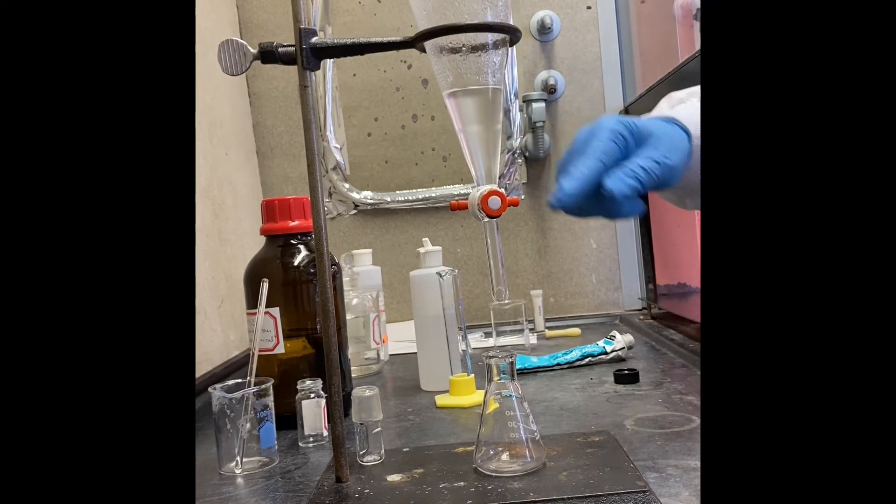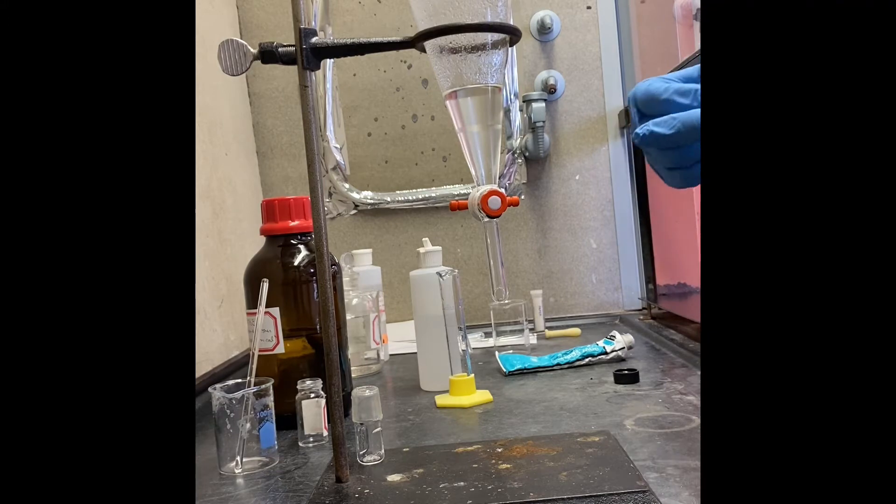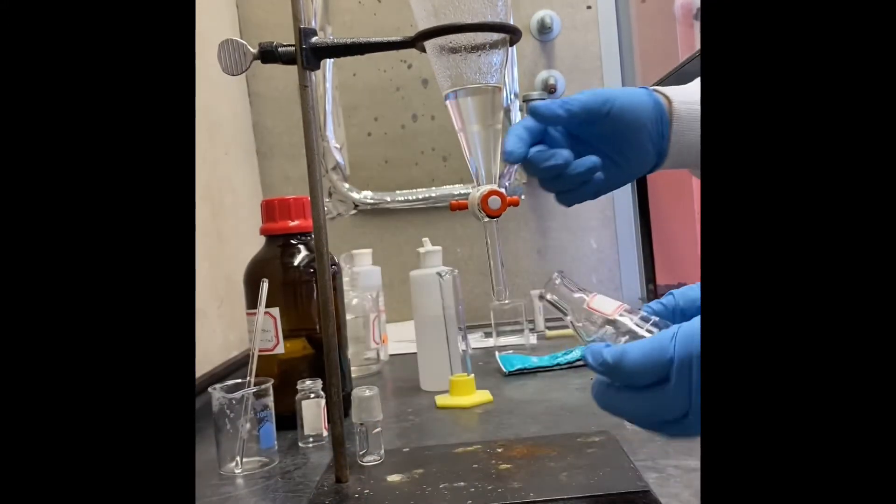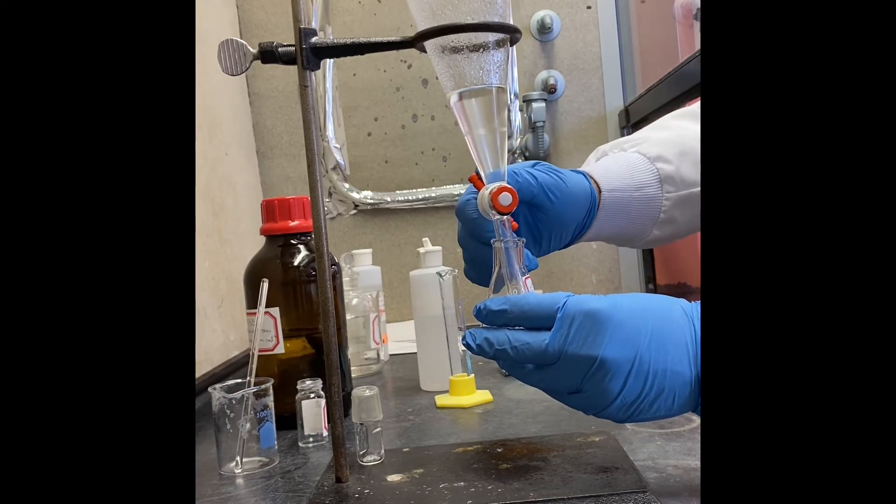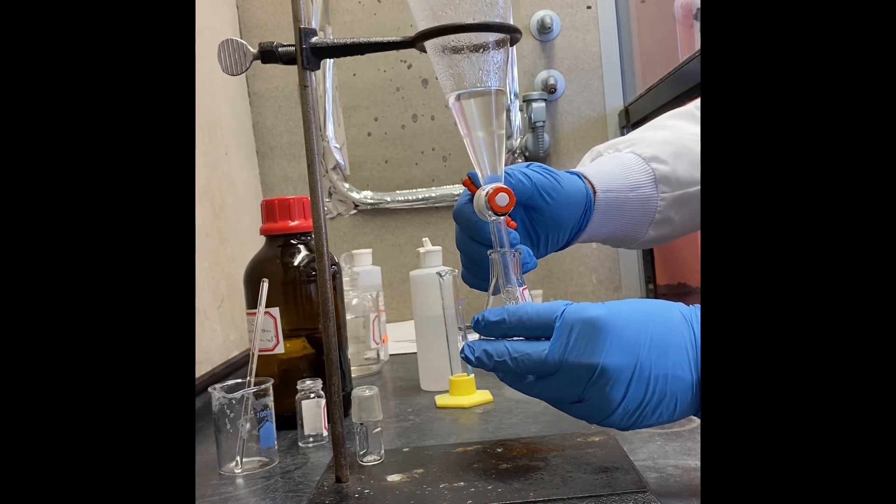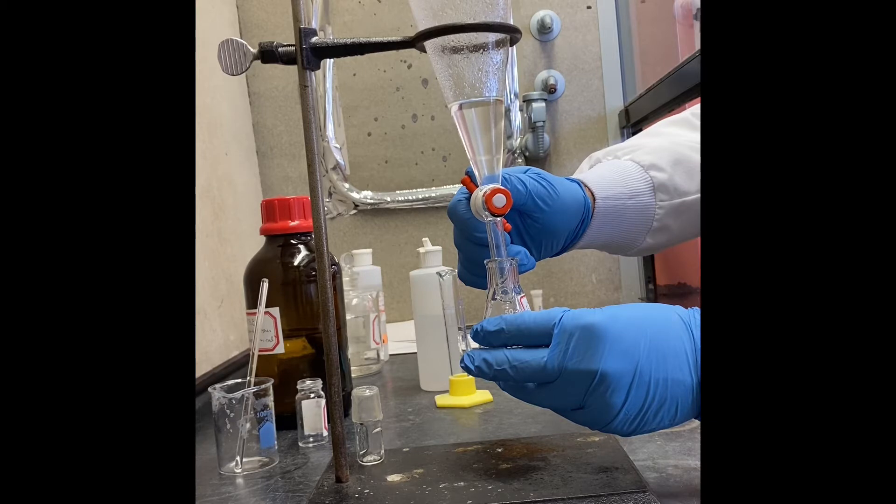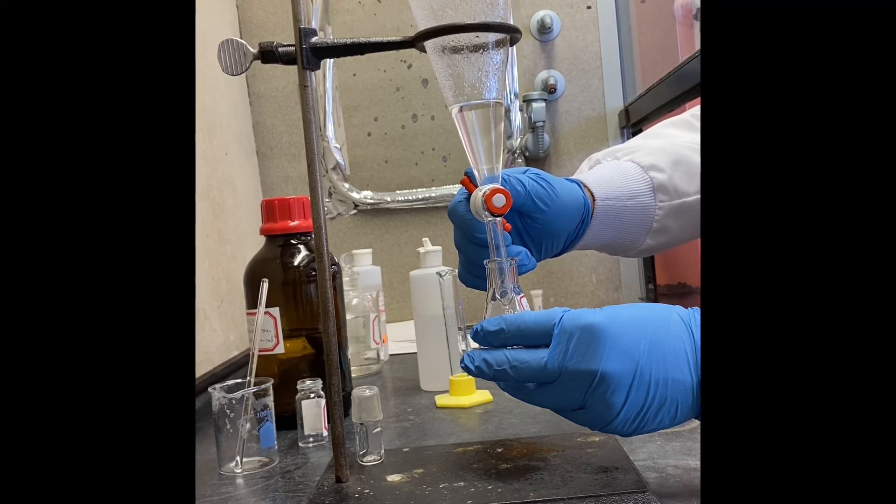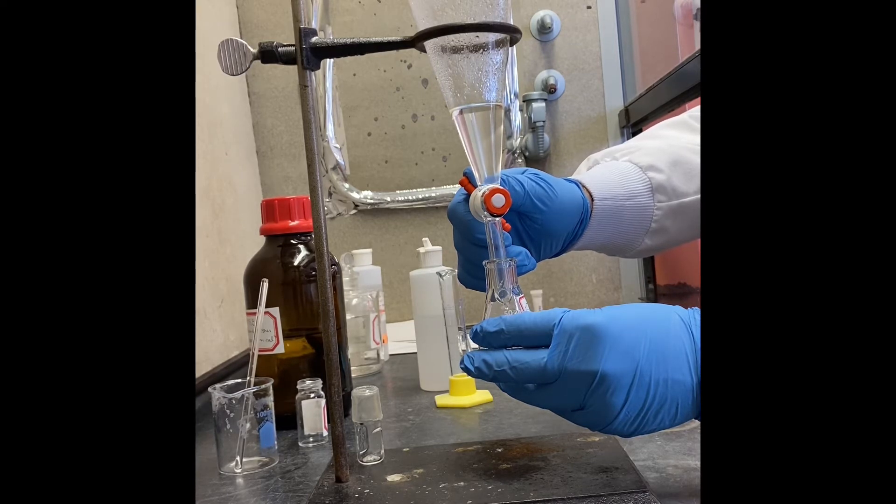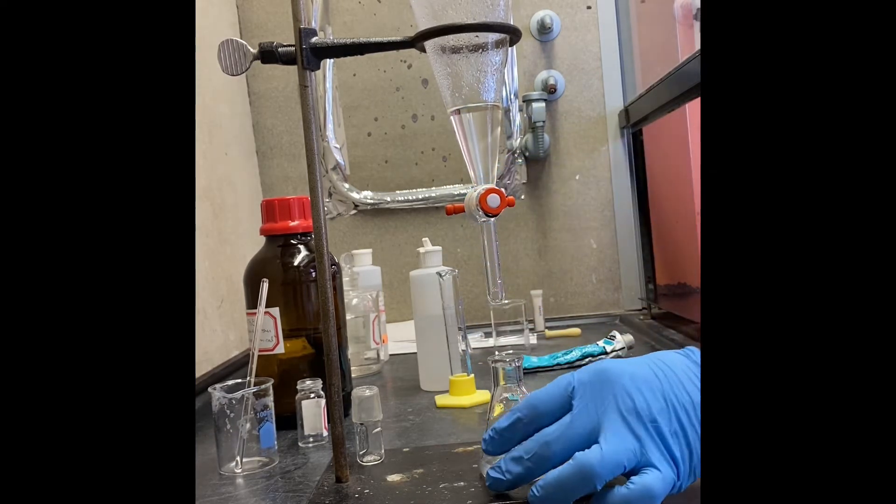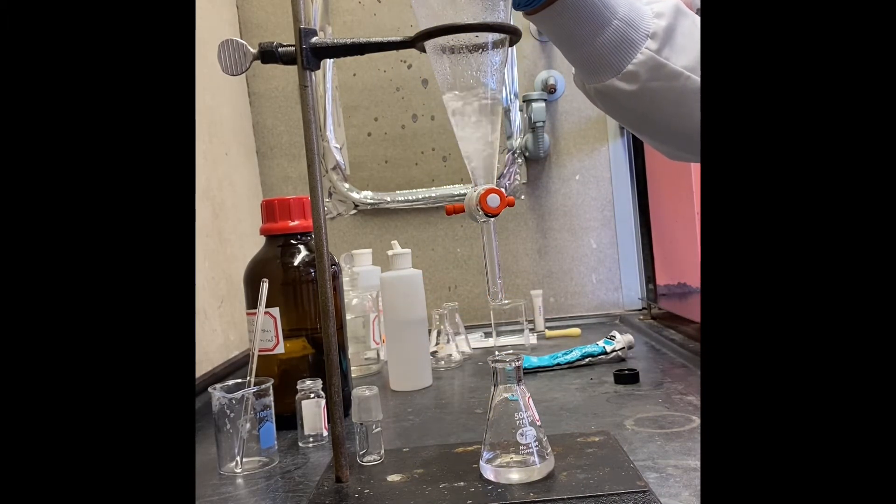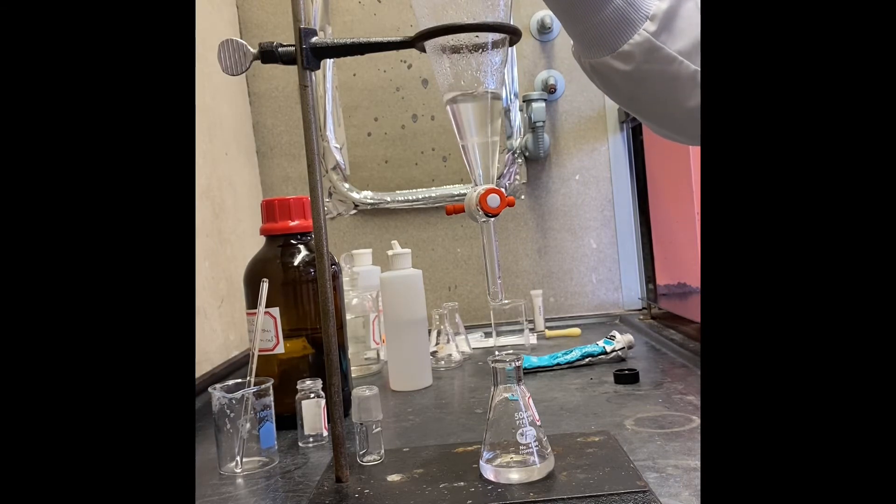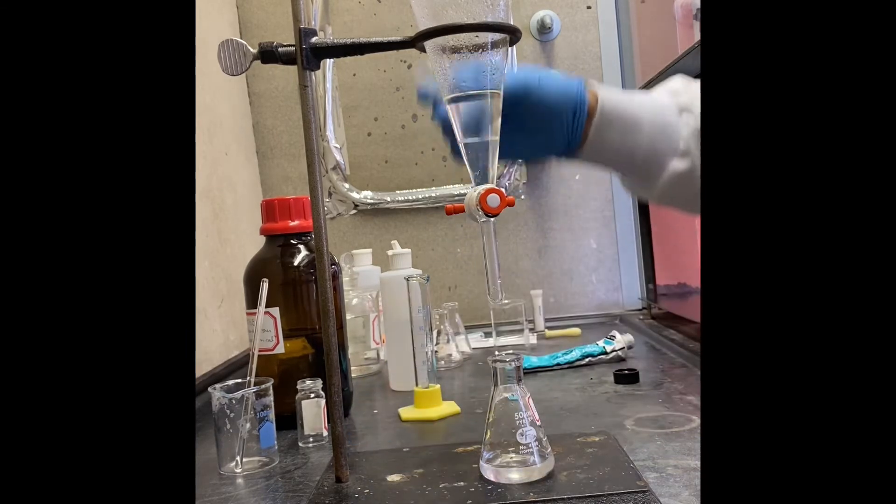Now we have to let it settle down. As you see we got two layers, and now we're going to take the bottom layer out. We're going to do one more time to make sure we did proper extraction and we converted all the carboxylic acid, which is benzoic acid in that case, to the benzoate.